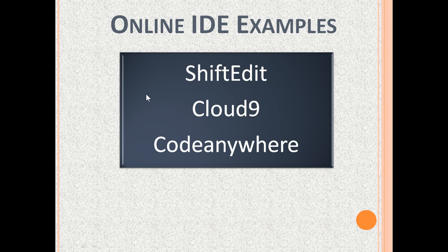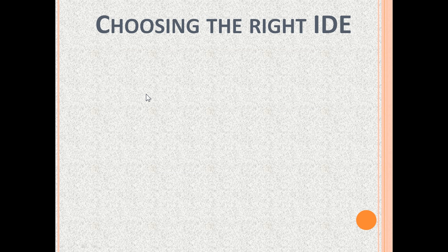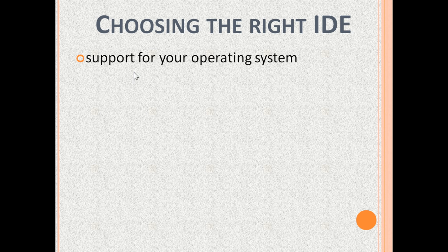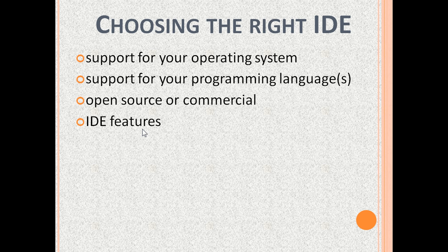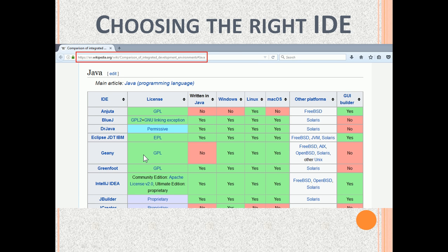Next, choosing the right IDE for you. In order to choose the correct IDE, you should check if it has support for your operating system, support for the programming language that you want to use, whether it is open source or commercial, the IDE features that you need and good IDE performance. You may want to refer to the comparison of available IDEs categorized by programming language. It is available in Wikipedia.